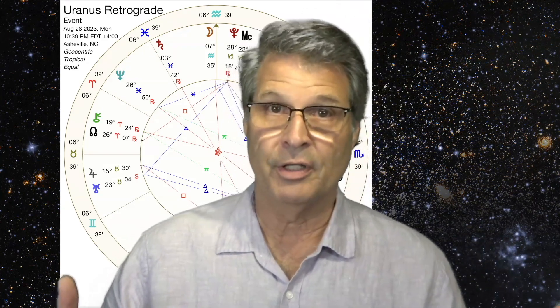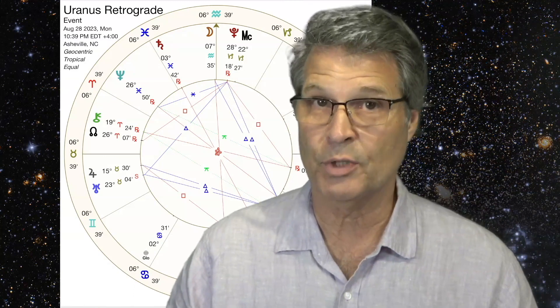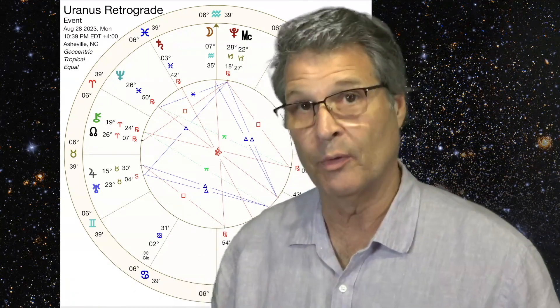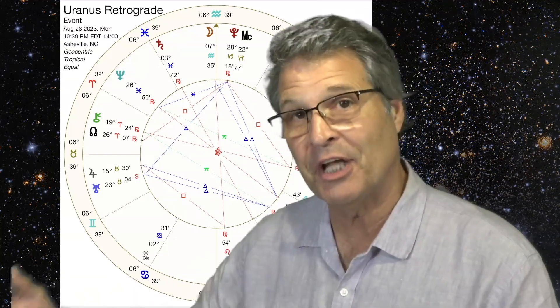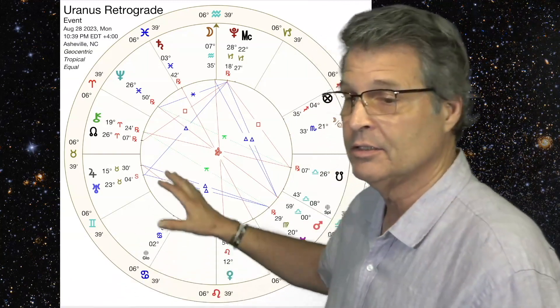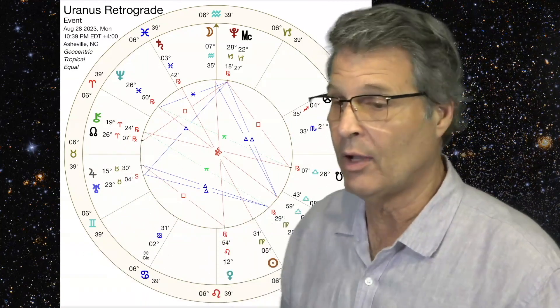That's also the challenging side of Uranus and its surprises. Now, one of the things significant about this retrograde, which lasts all the way until the end of January 2024, by the way, long retrograde. This is going to be something that we're going to be sitting with for quite a while.